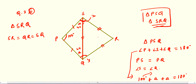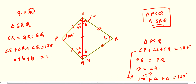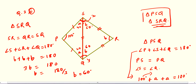In an equilateral triangle, all angles are equal. So in triangle SRQ, angle S plus angle R plus angle Q equals 180 degrees. Suppose each angle is B. So B plus B plus B equals 180, giving 3B equals 180. Therefore B equals 180 divided by 3, which is 60 degrees. So each angle is 60 degrees.